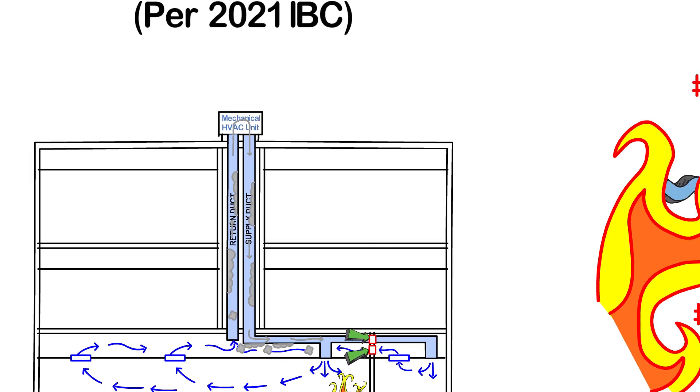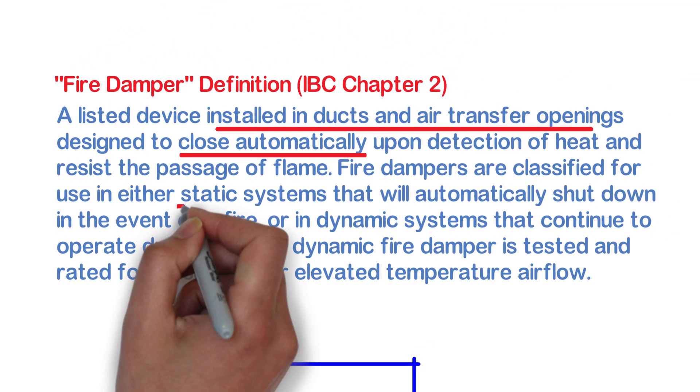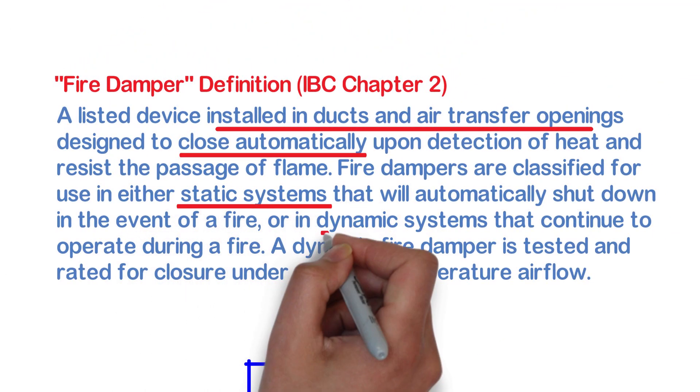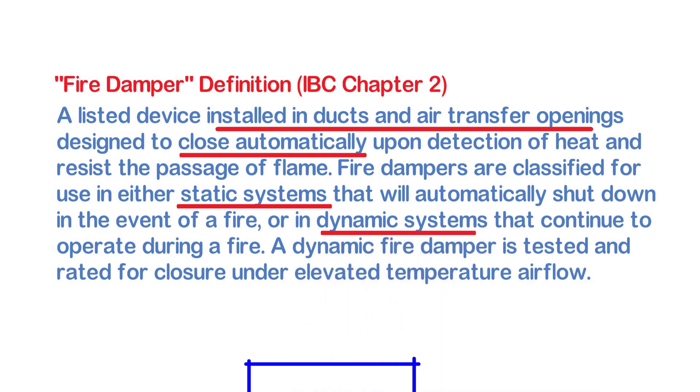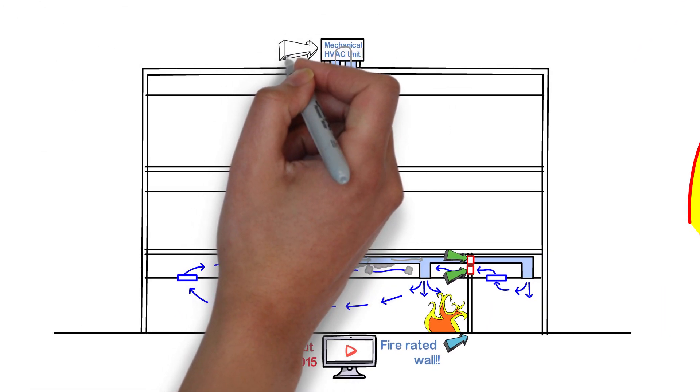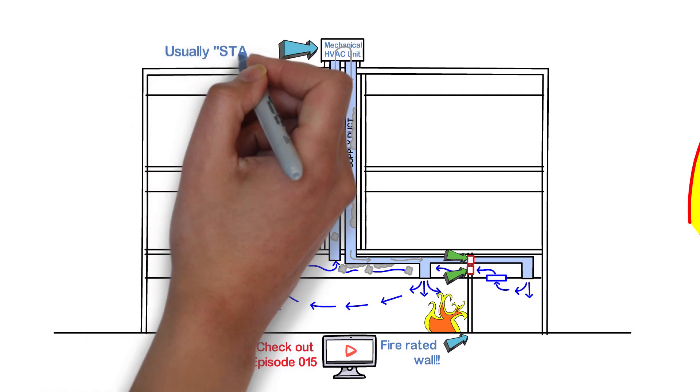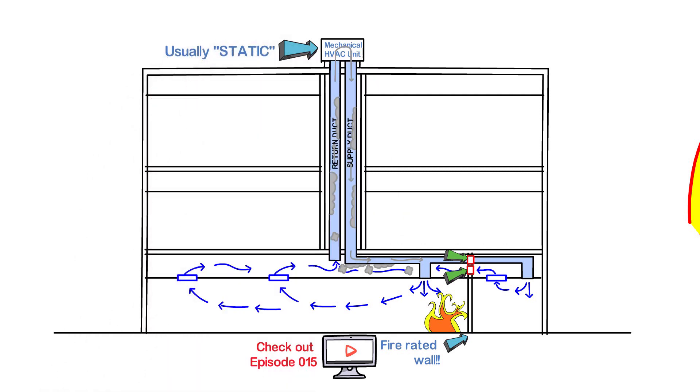Going back to the code section, the second part of the definition mentions that there are such things as static systems and dynamic systems. I am not getting too much into this other than letting you know that most air distribution systems for the purpose of providing heating, venting and air conditioning are usually static. As applicable to this section, dynamic systems are systems that usually assist in exhausting air.